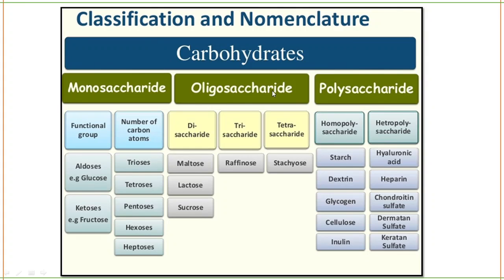Next is oligosaccharides, divided into disaccharide — examples: maltose, lactose, sucrose — trisaccharide (3 monosaccharides together) — example raffinose — and tetrasaccharide (4 monosaccharides together) — example stachyose. These are bonded with each other.